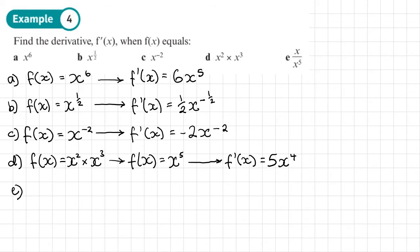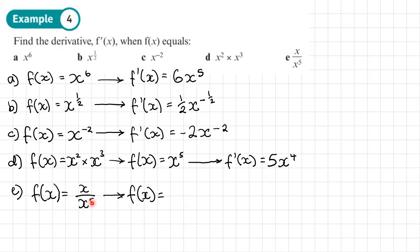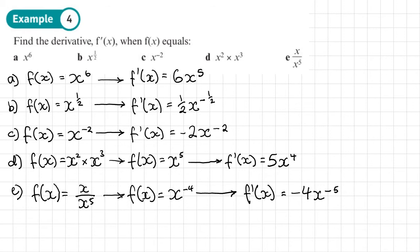Part e: f of x equals x over x to the power 5. Simplify first — this is x to the power 1 divided by x to the power 5, so subtracting the powers gives x to the power negative 4. Now differentiate: multiply by the power, giving negative 4x, then take 1 away from the power, giving f dash of x equals negative 4x to the power negative 5.